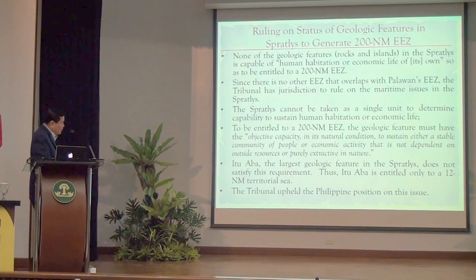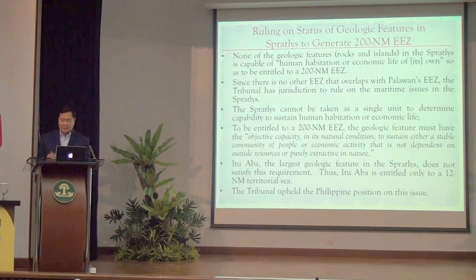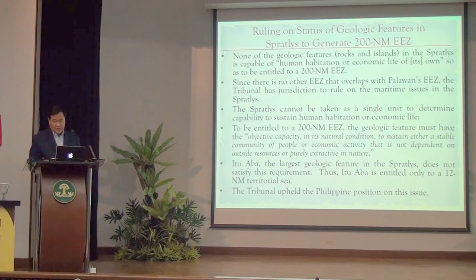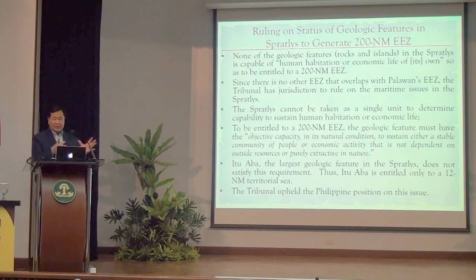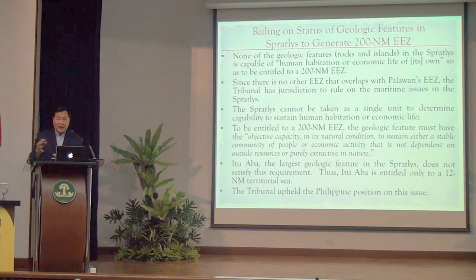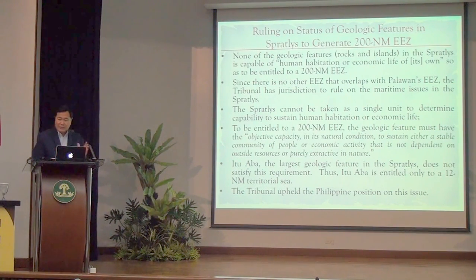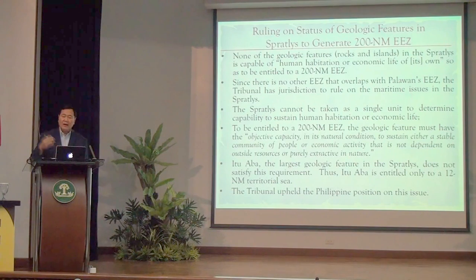The tribunal defined the standard: you must consider whether the island, in its natural condition, can sustain a stable community of people. Itu Aba is occupied by Taiwan. Taiwan installed a desalination plant for fresh water and brought soil from Taipei to grow vegetables and trees — but because the tribunal said 'natural condition,' the desalination plant and imported soil do not count. Natural condition means only the resources of the island and its 12 nautical mile territory — no external additions are considered.